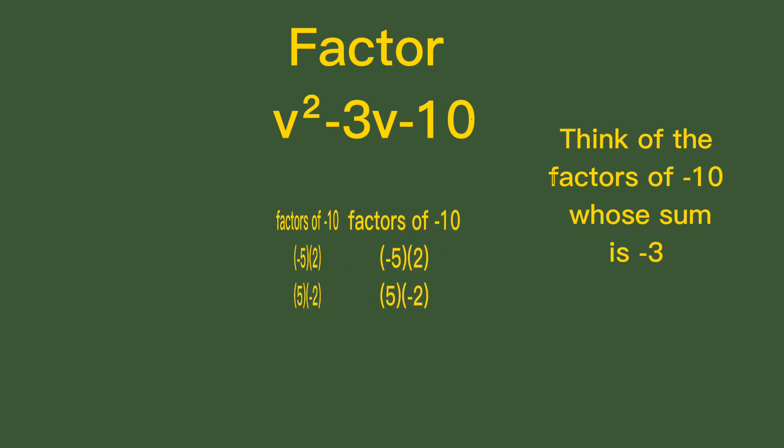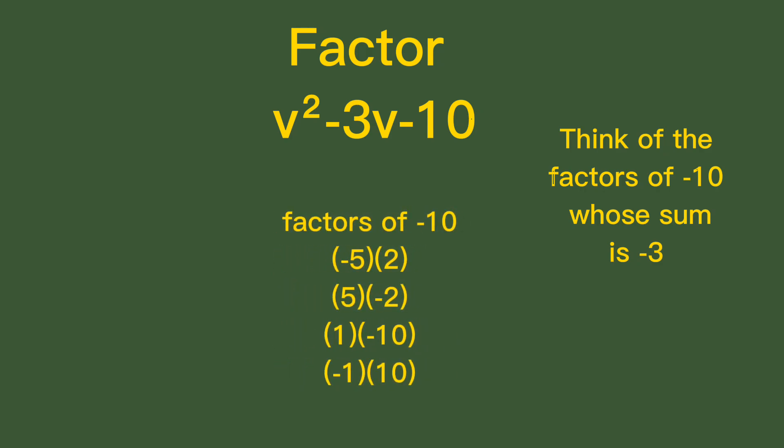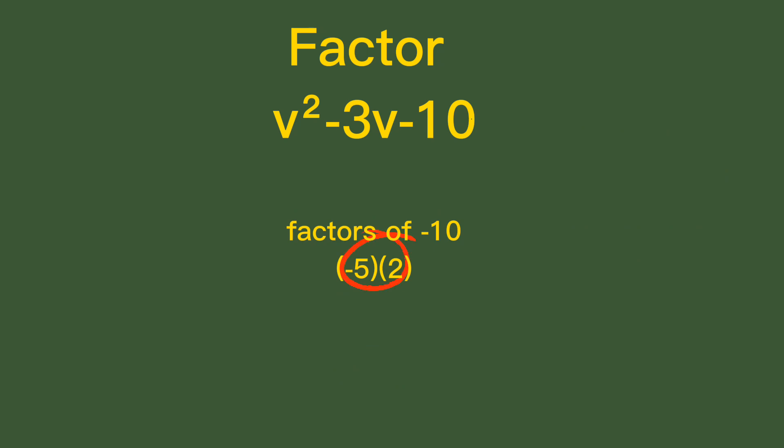We have negative 5 times 2, 5 times negative 2, 1 times negative 10, and negative 1 times 10. Which factors will give negative 3 as a sum? We have negative 5 and positive 2. The sum is negative 3, and negative 3 is found in the middle term.